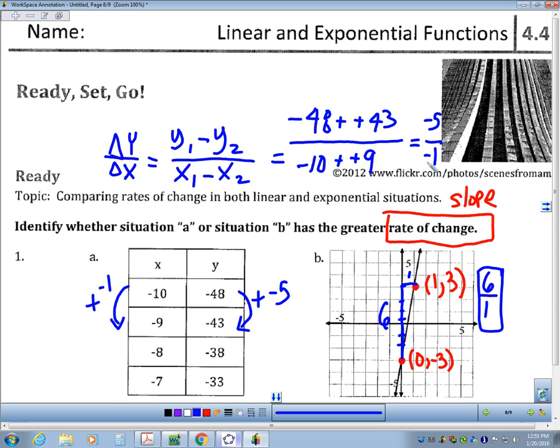It is negative 5 over negative 1, which is positive 5 over 1, or just 5. And so, what's larger? 5 or 6? 6 is larger. So you can see that the greatest slope is 6. Situation B has the greatest rate of change. I hope that helps. Like I always say, study hard, learn a lot. We will see you soon. Bye-bye.